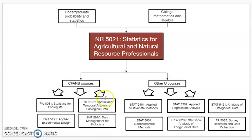There are also other courses — a tremendous amount of courses — offered in other university departments. For example, we have a statistics department, a biostatistics department, and other departments with great quantitative classes like the educational psychology department. So there are a lot of options as a graduate student to enroll in other classes, particularly after taking this class, which can serve as a good foundation for those other courses.